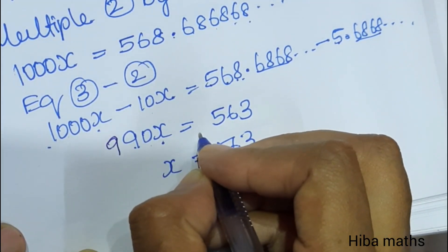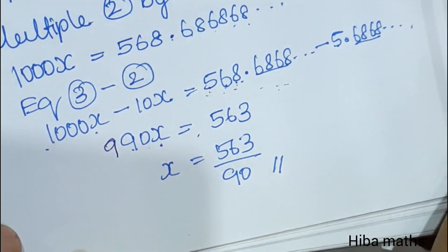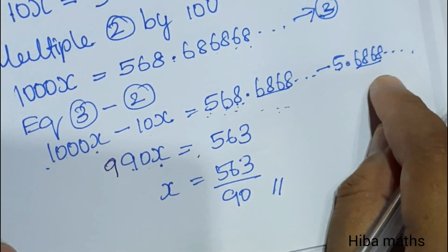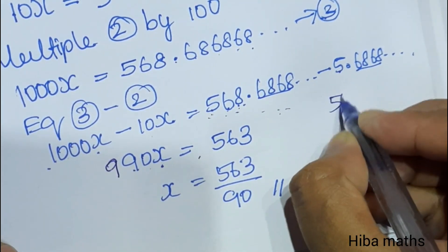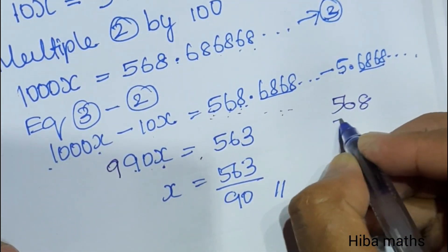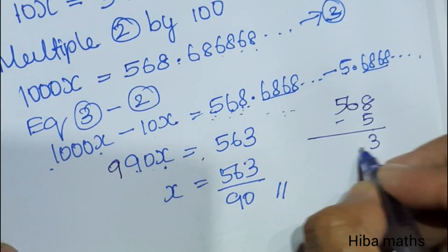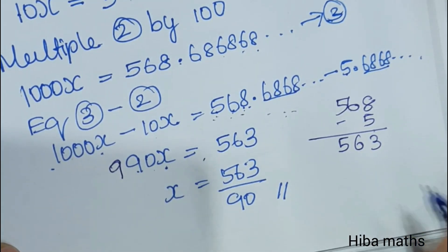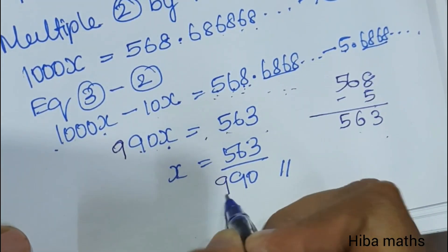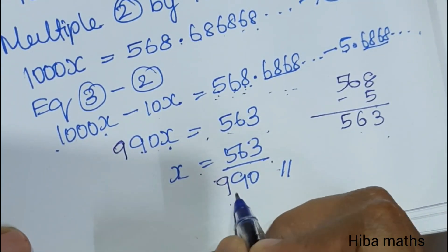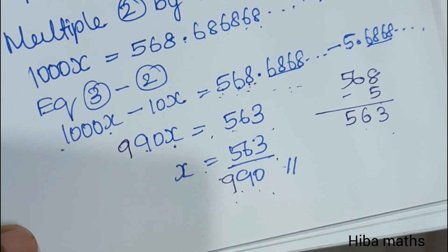990x equals 568.686868 minus 0.686868, so the decimal parts cancel. That equals 563. Therefore x equals 563 divided by 990. That is the answer. Thank you so much for watching.